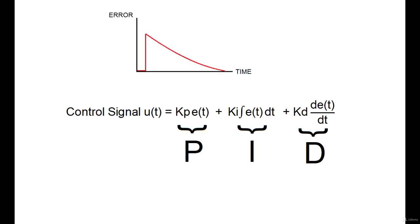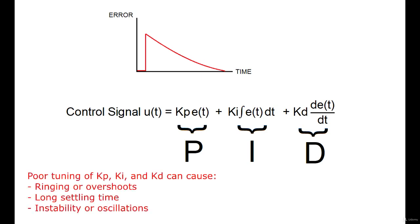But when assessing a control system, having the error term go down to zero is not the only goal, because although you can adjust these parameters such that the error is driven to zero, poor tuning of these constants can cause overshooting the desired set point, long settling time, and even in some cases instability or oscillations.